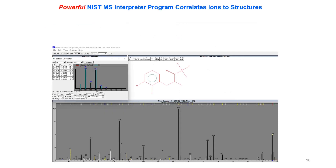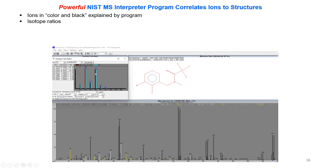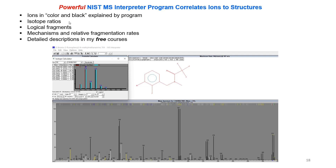Another powerful tool is the NIST Mass Spec Interpreter program, which correlates ions to structures. When we put our unknown spectrum into the NIST MS Interpreter search, almost everything is explained — ions in color and black are explained by the program, while white ions are unaccounted for, and yellow ions are due to rearrangements. Isotope ratios are shown for the molecular ion, comparing the modeled and observed values — when they match closely it gives great confidence in the identification. The program also shows logical fragments, mechanisms, and relative fragmentation rates. A detailed description of how to use MS Interpreter is available in one of my free courses.